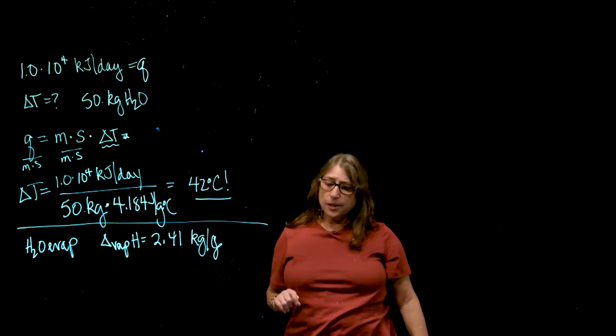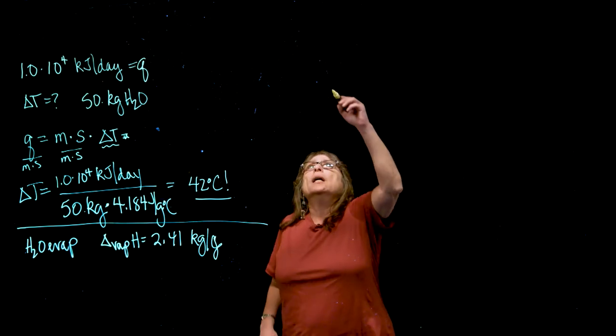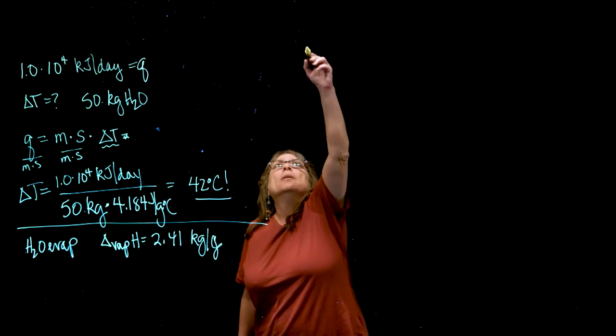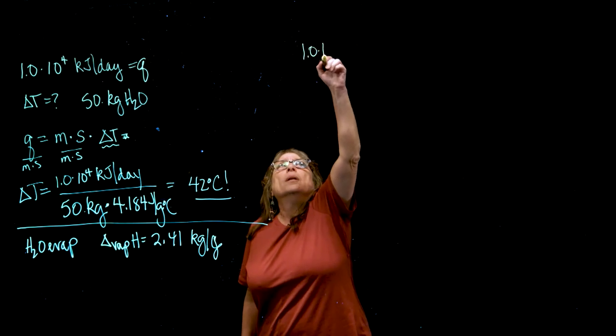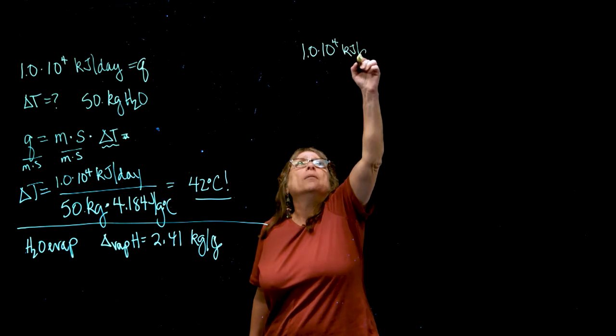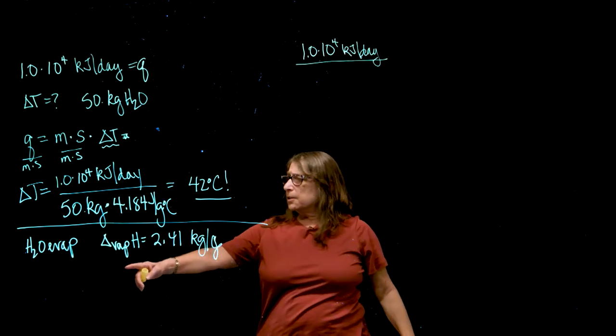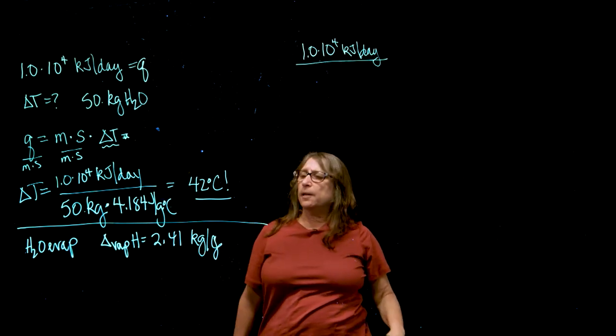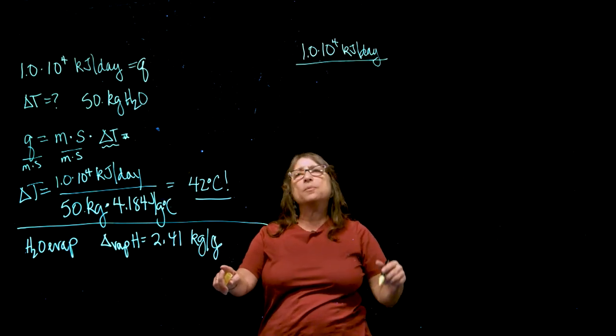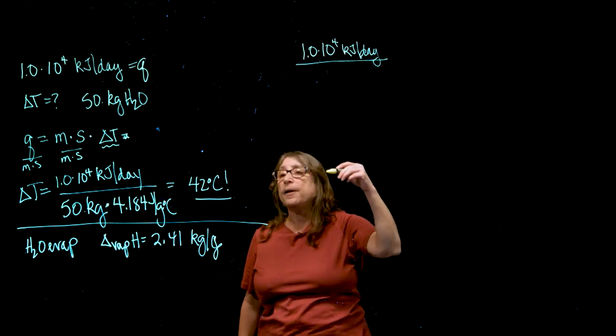So if I'm trying to figure out how much water to evaporate, I need my heat, 1.0 times 10 to the 4 kilojoules per day. And I'm going to divide this by the enthalpy of vaporization, because it has grams in the denominator. That'll tell me how much water in grams will evaporate.